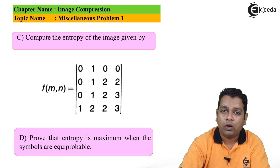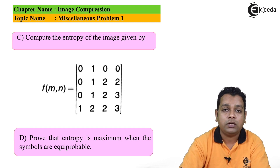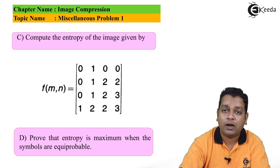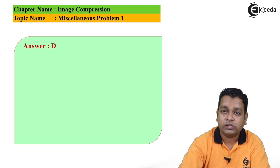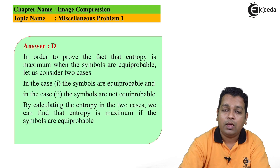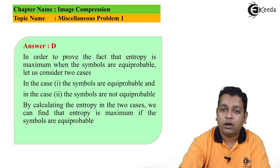For Part D, to prove that entropy is maximum when symbols are equiprobable, we consider two cases: Case 1 where symbols are equiprobable, and Case 2 where symbols are not equiprobable. By calculating entropy in both cases we can verify that entropy is maximum under equiprobability.